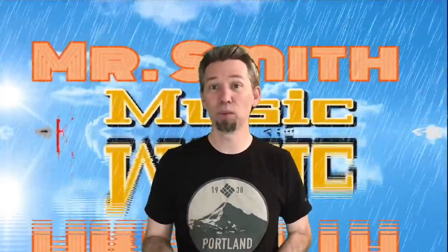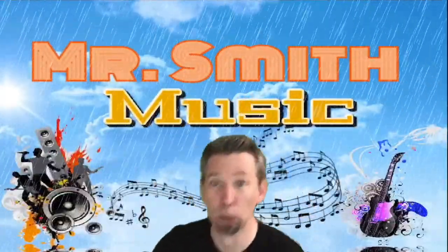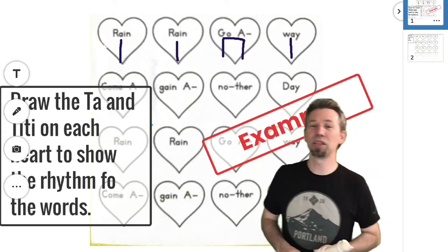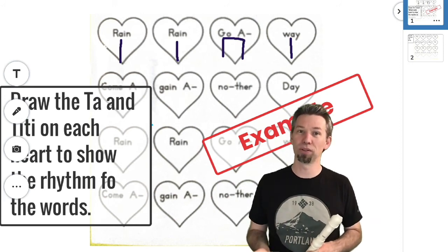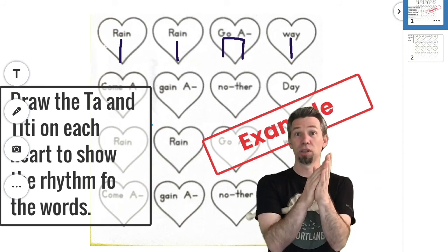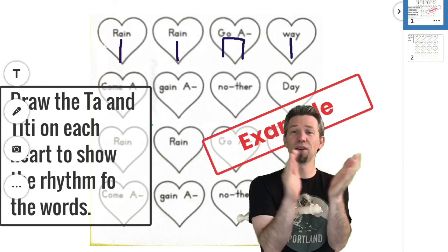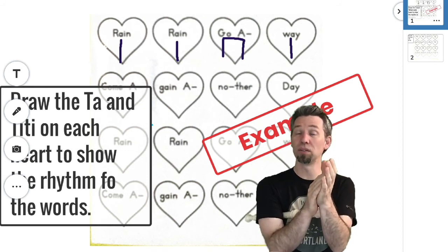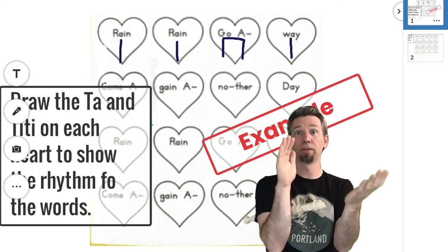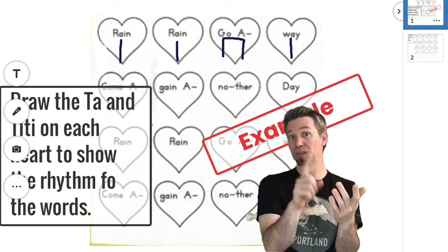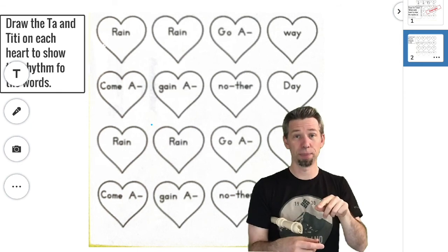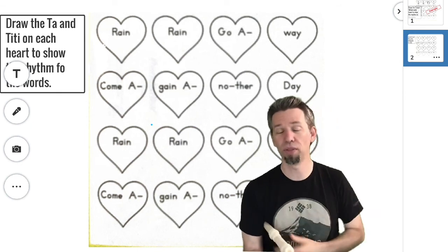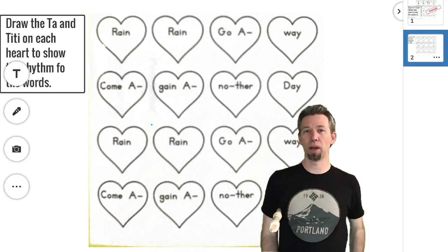Good job, you guys. So we have an activity for you on Seesaw that's going to use the rhythm of the words. Let's jump over to Seesaw. Here we are in Seesaw. In the Seesaw activity, you're going to draw the Tas and Titis that go along with the rhythm of the words. So if I clap the first line — rain, rain, go away — we have to figure out the Tas and Titis. On the first beat, on that first heartbeat, it's rain. Rain gets one clap; it has one syllable, so that would be a Ta. You can draw in the rest of the Tas and Titis. And you can clap and sing the whole thing, or you can pat your chest or pat your lap or pat your head or stomp your feet.